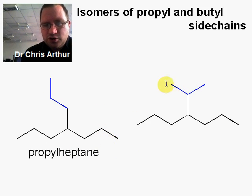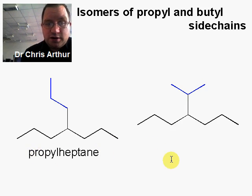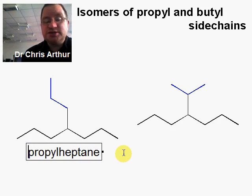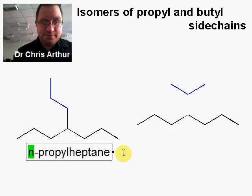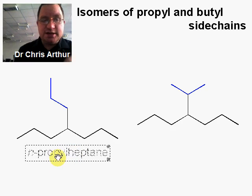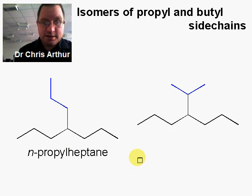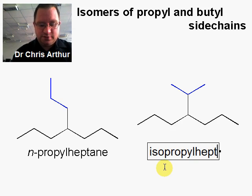On the right, we still have a propyl group — it's an isomer of propyl, but it still has three carbons in it. The question becomes: how do we deal with that? We introduce a new bit of nomenclature that goes at the start. The first one we call n-propyl, written in italics — this means it's normal, a straight chain. The other one we call isopropyl, making this isopropylheptane.